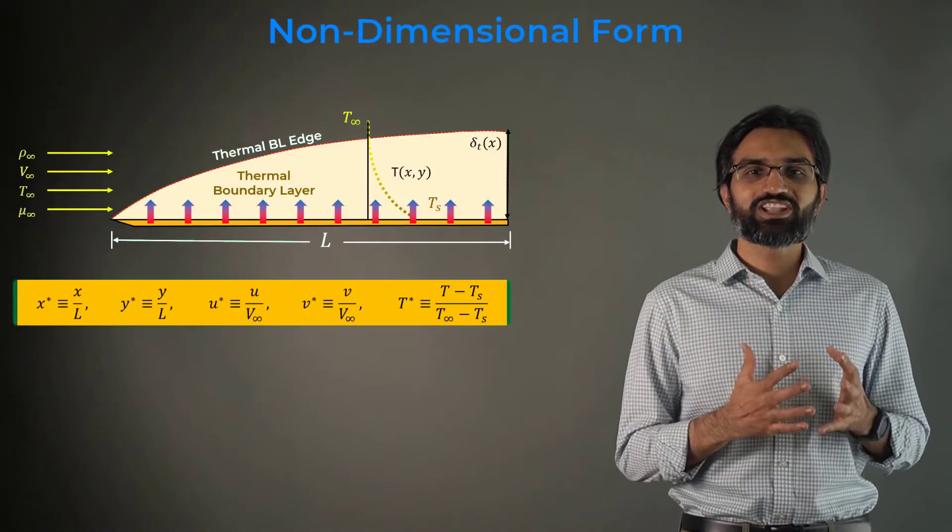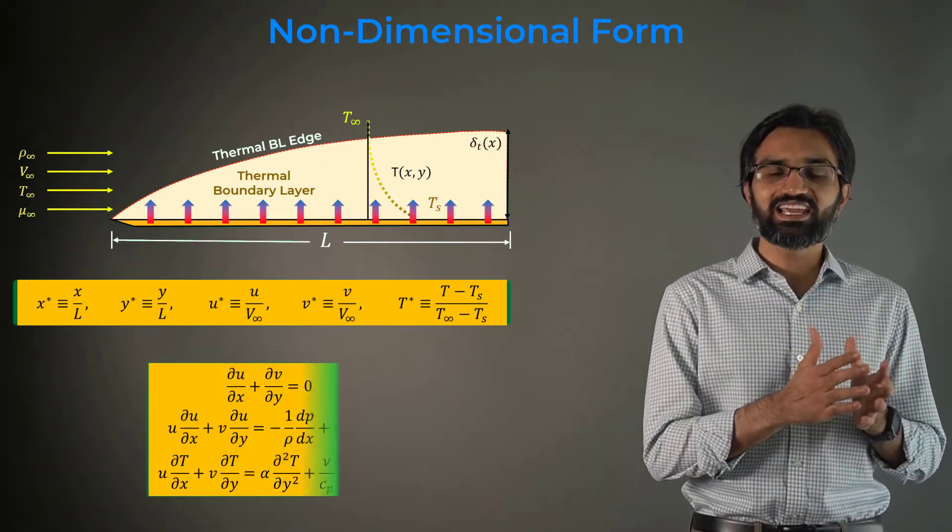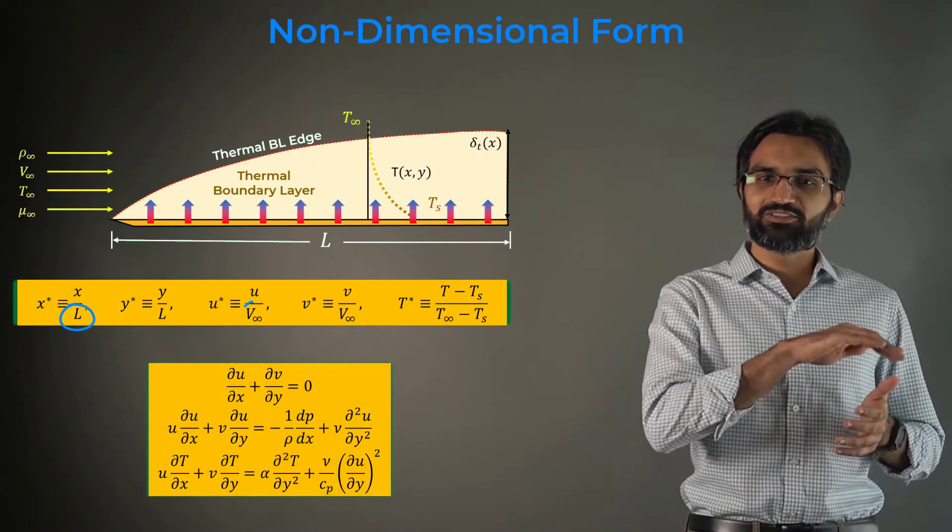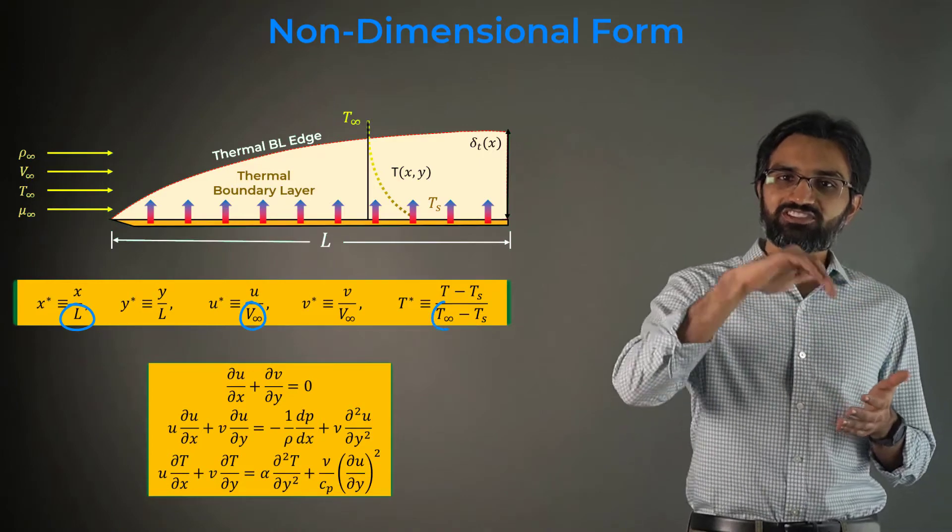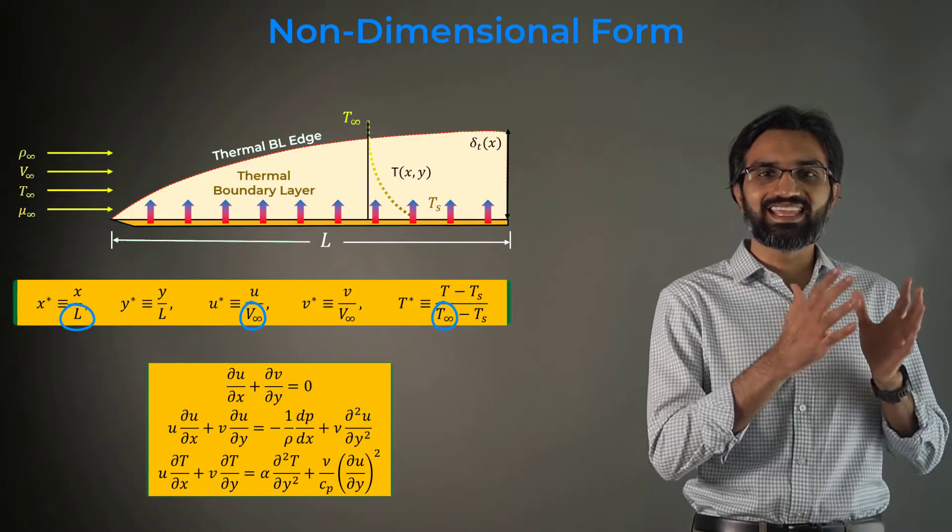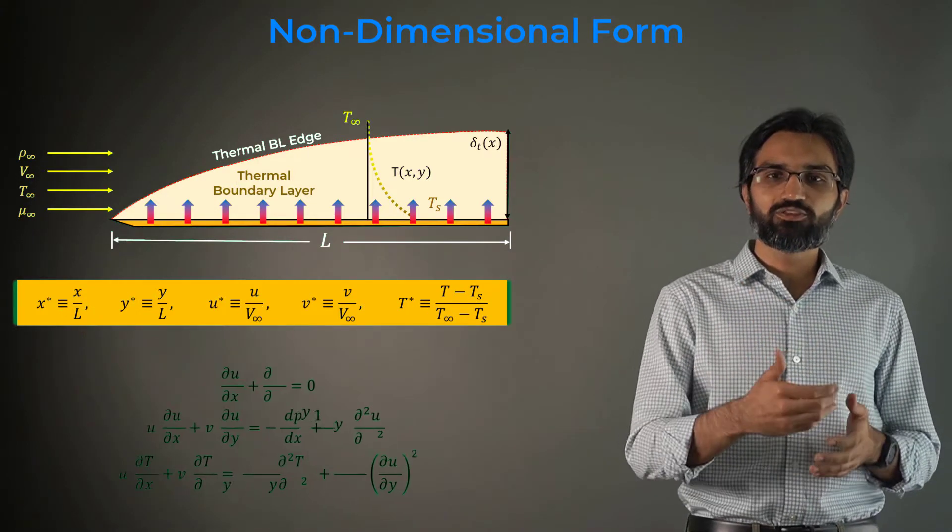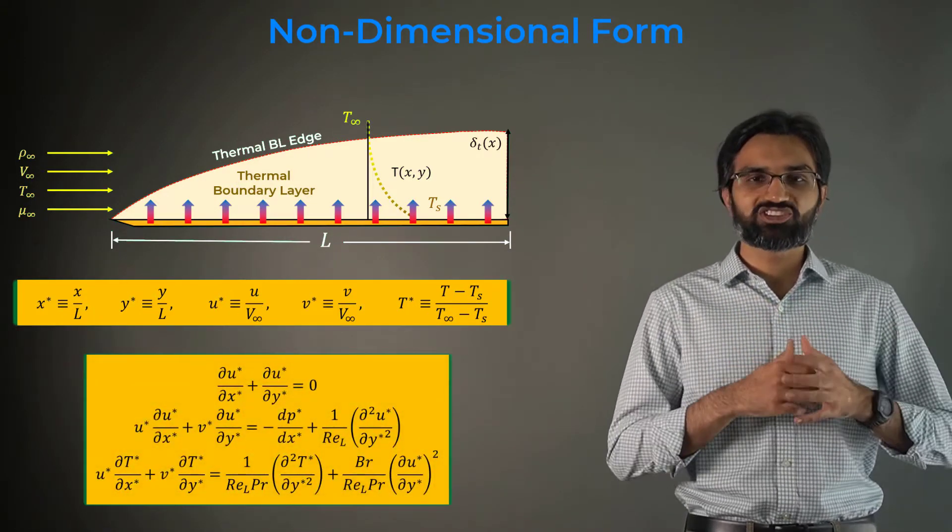Let us non-dimensionalize the laminar boundary layer equations. We will use the highlighted length of the flat plate, free stream velocity, and free stream temperature as our characteristic scales to normalize the independent and dependent variables. We obtain the following equations in their non-dimensional form.